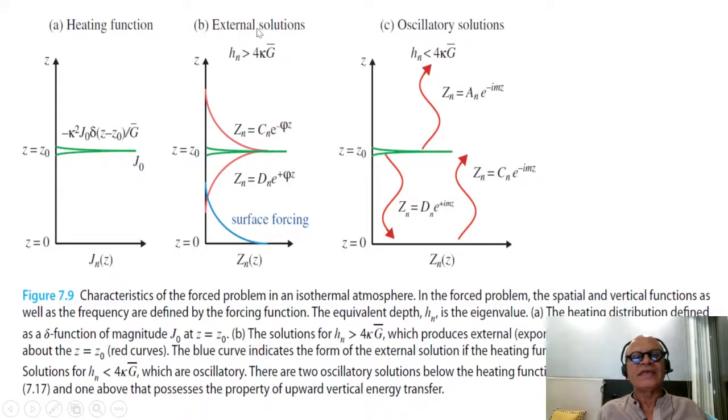And we get external solutions, Hn, when Hn equivalent depth is greater than 4 kappa G-bar, where G-bar is prescribed. So you get upward decaying solution and downward decaying solution. If you put the forcing at the surface, obviously you will only get upward solution. This Zn here is given by these functions Cn and Dn.